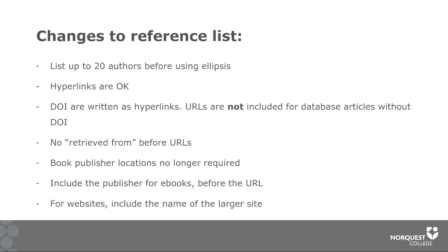An additional change regarding online resources such as websites and online news articles is that it's no longer necessary to put the words 'retrieved from' before the URL. This information can be omitted and you can go straight to writing the URL. Also, if you have a book — either a physical paper book or an ebook — it's no longer necessary to include the location of the publisher. The city, state, province, or country is not required to be written anymore.